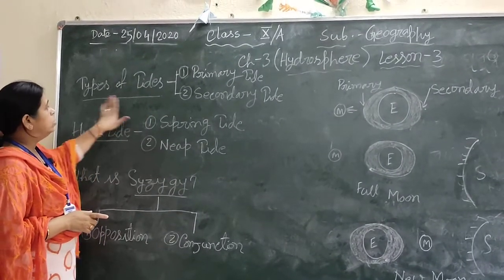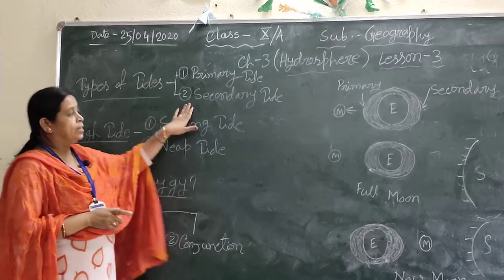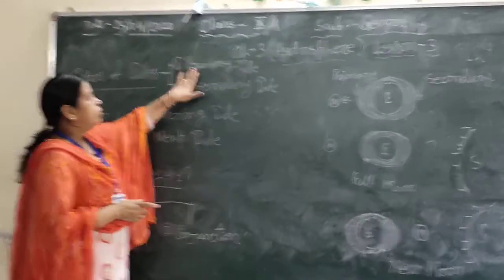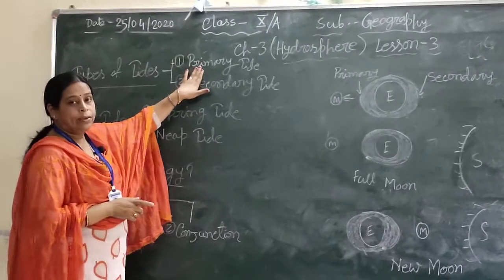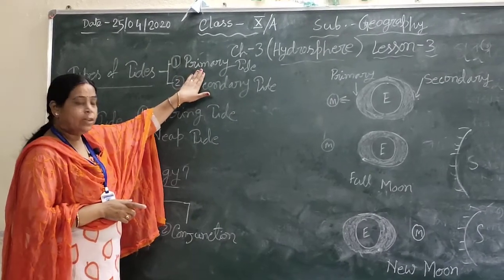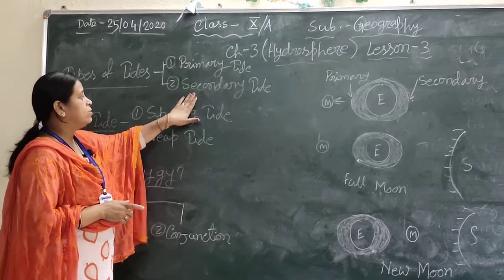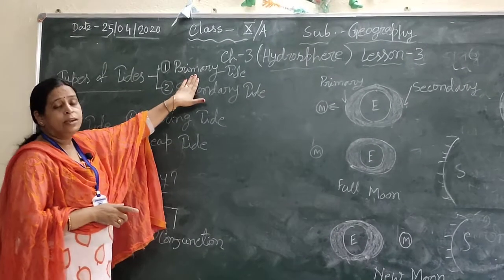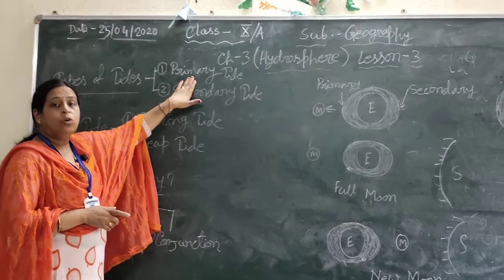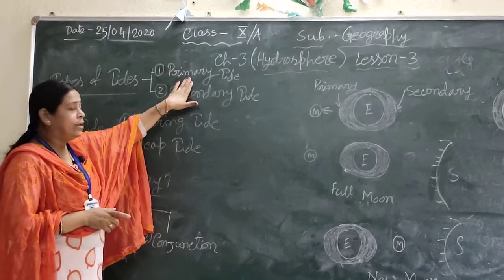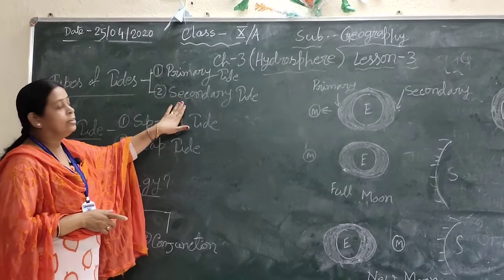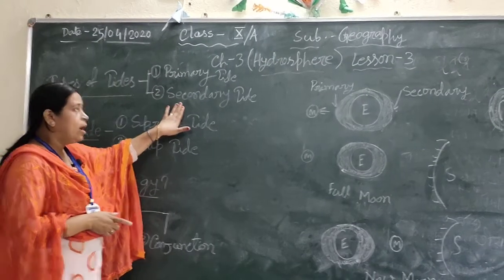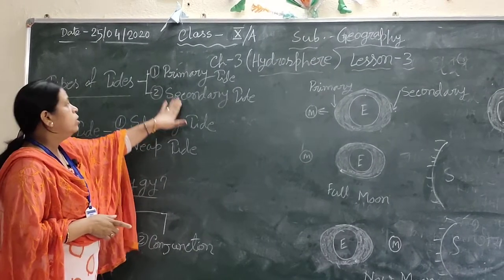Today we learn about the types of high tide. The high tides are of two types: primary high tide and secondary high tide. Primary high tide is also known as direct high tide, and secondary high tide is also known as indirect high tide.